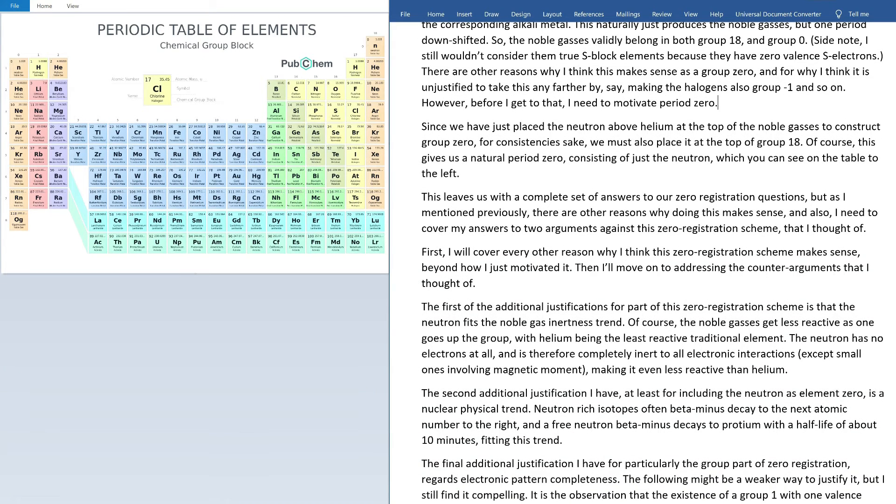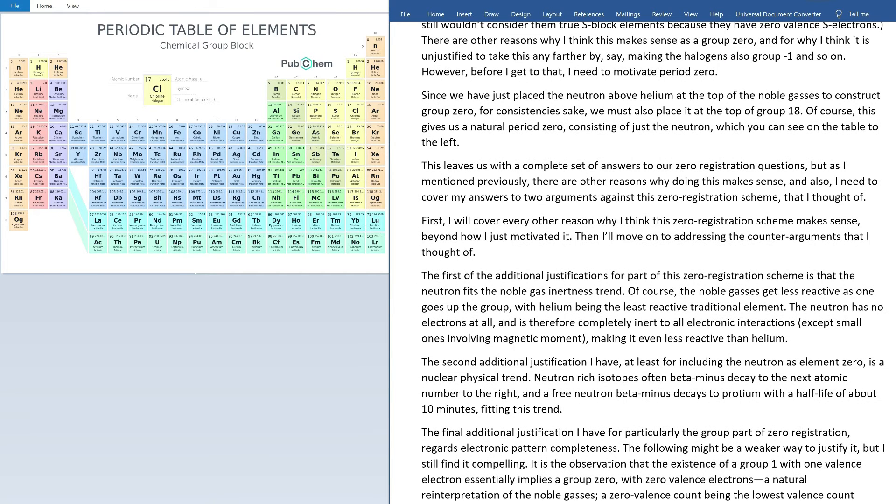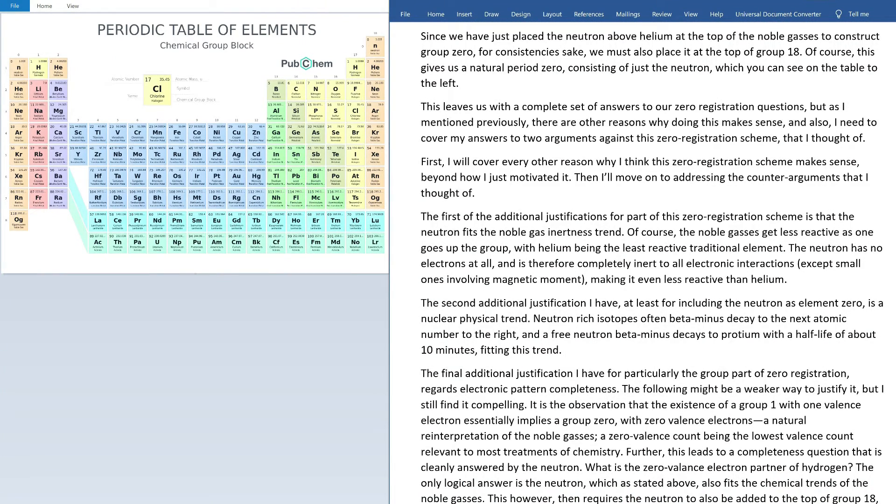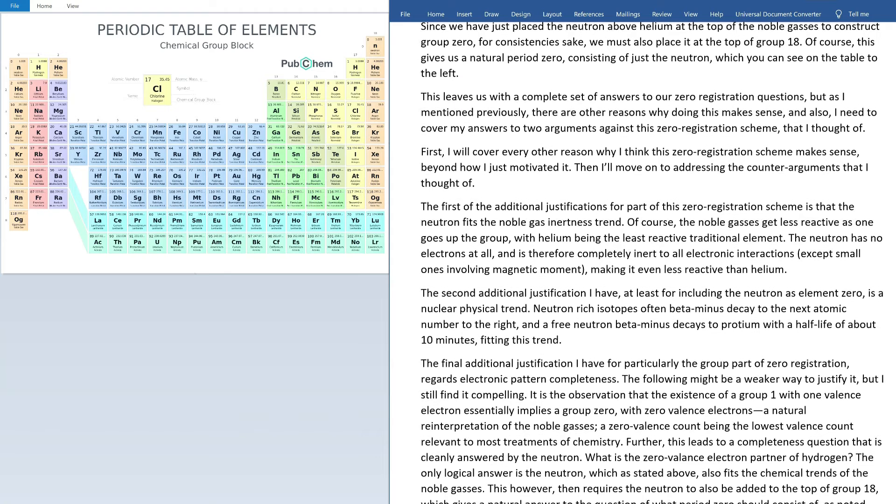Since we have just placed the neutron above helium at the top of the noble gases to construct group zero, for consistency's sake we must place it at the top of group 18 as well. Of course, this gives us a natural period zero consisting of just the neutron, which you can see on the table to the left. This leaves us with a complete set of answers to our zero registration questions, but as I mentioned previously, there are other reasons why doing this makes sense, at least to me, and also I need to cover my answers to the two arguments against this zero registration scheme that I thought of. First, I will cover every other reason why I think this zero registration scheme makes sense beyond how I just motivated it, then I'll move on to addressing those two counterarguments. The first of my additional justifications for part of this zero registration scheme is that the neutron fits the noble gas inertness trend.